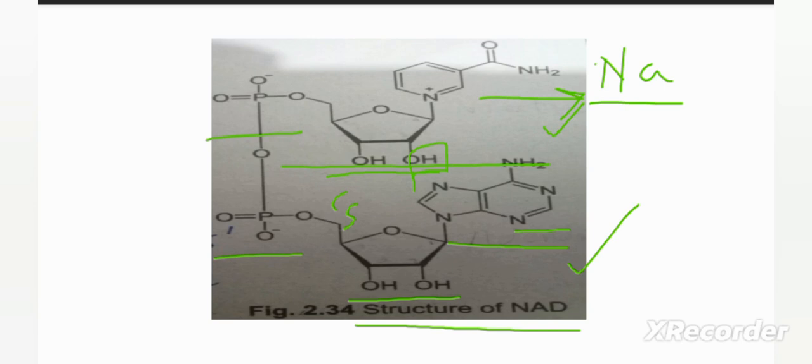NAD, nicotinamide adenine dinucleotide, is a coenzyme. It works with dehydrogenase. NAD is reduced into NADH2. Reduction is the gain of hydrogen, so when NAD is reduced in the presence of an oxidizing agent, it forms NADH2.